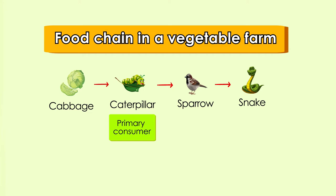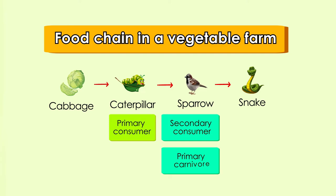Animals that eat the primary consumers are called secondary consumers, also known as primary carnivores. For example, a frog is a primary carnivore because it eats primary consumers such as flies and grasshoppers. A secondary consumer can also be an omnivore — for example, sparrows that eat fruits and caterpillars.